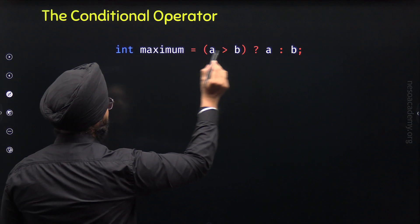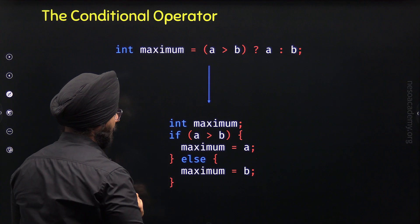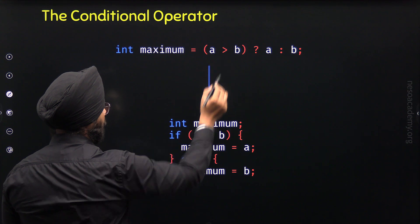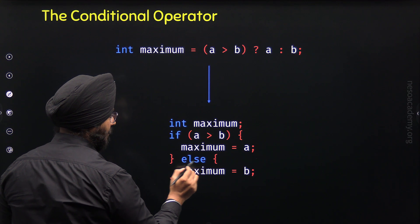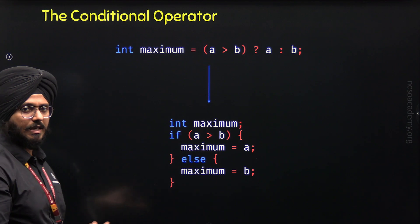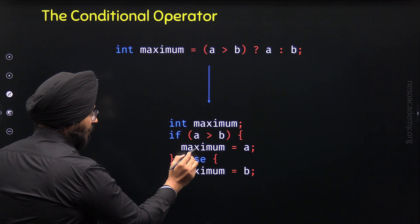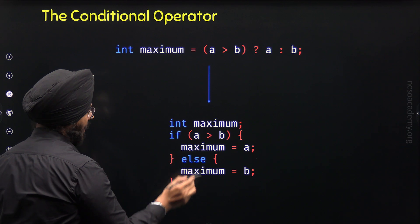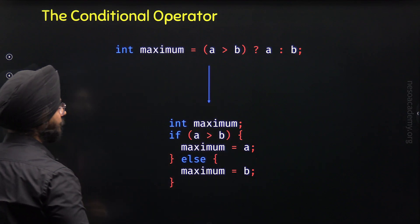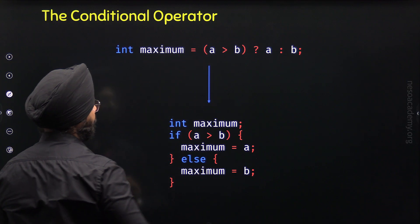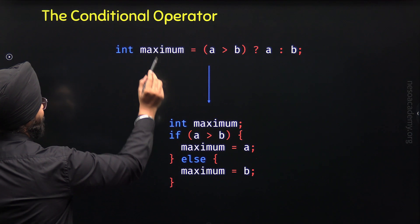We can convert this line to this equivalent if-else statement. First, we need to define the variable maximum. Then we have the if-else statement. Here I am checking the condition a greater than b — this is the same condition. If a is greater than b, then maximum equals a. Otherwise, or else, maximum equals b. This is the simple meaning of the if-else statement. If the condition is true, maximum holds the value of a; otherwise it holds the value of b.